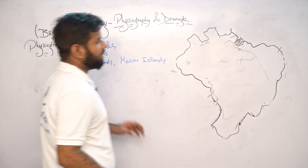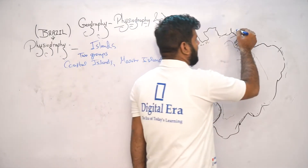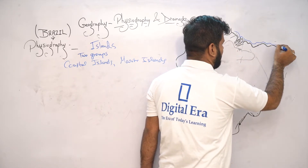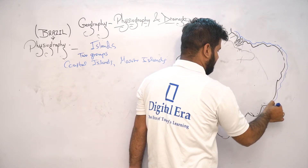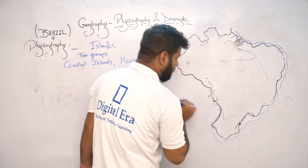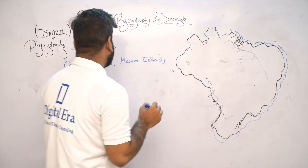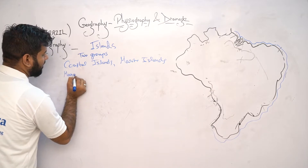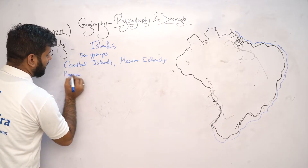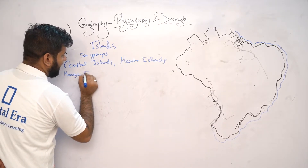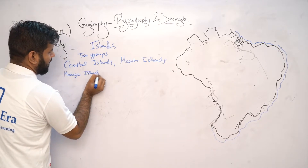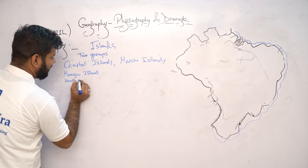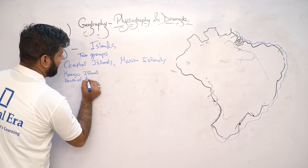Coastal islands are situated on Brazil's coast. The most important example, mentioned in the previous topic, is the island at the mouth of the Amazon River.